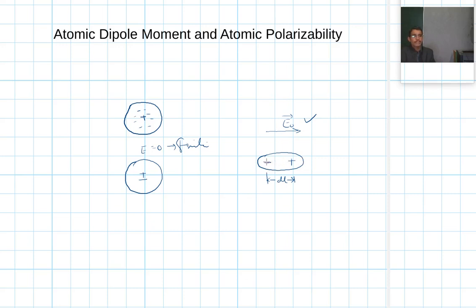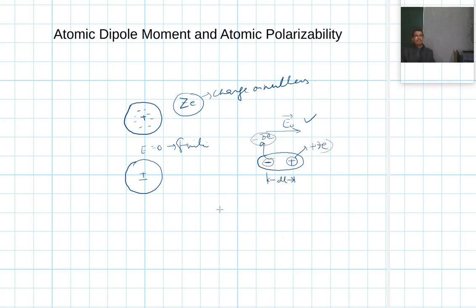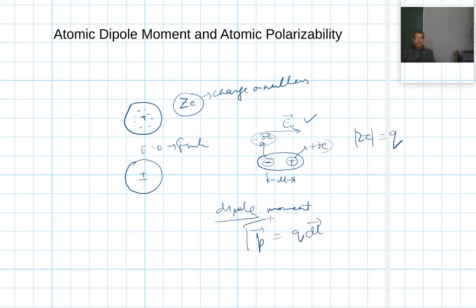Say this separation is dl, and this is due to the application of the electric field which we have applied. Due to this, both positive and negative charges are separated apart. Say if ze is the charge on the nucleus, then they are separated apart — plus ze and minus ze are separated at a radial distance, and this induces a dipole moment, because dipole moment is induced when two equal and opposite charges are separated at a certain distance.